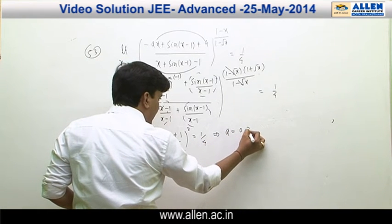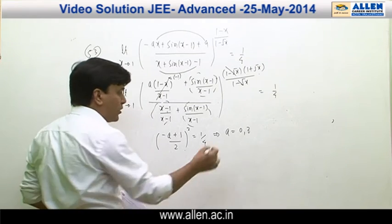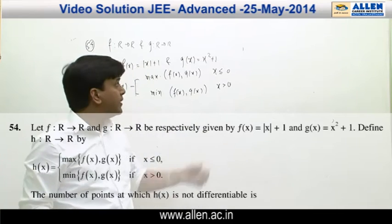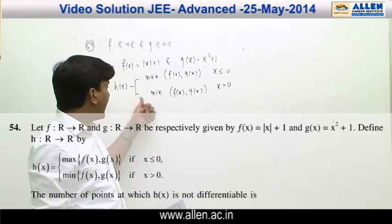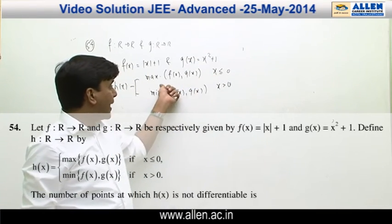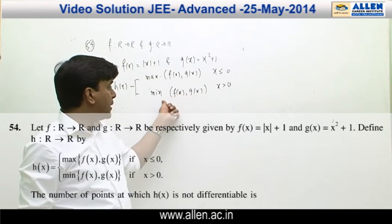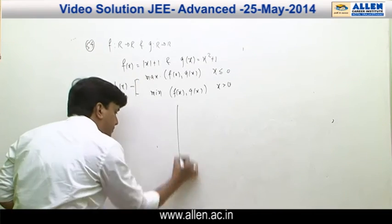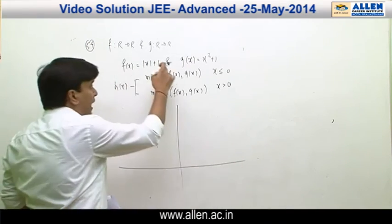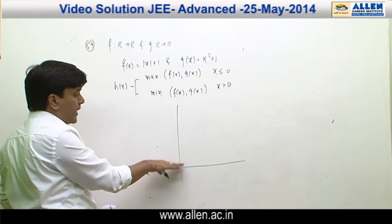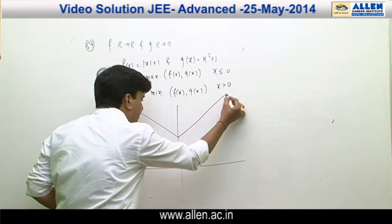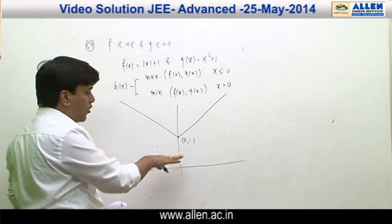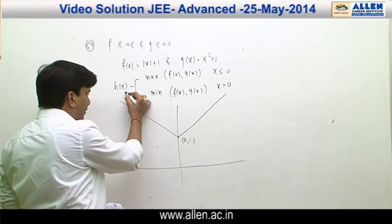In question number 54, f(x) = |x + 1|, g(x) = x² + 1, and h(x) is defined as the maximum of f(x) and g(x) for x ≤ 0, and the minimum of f(x) and g(x) for x > 0. Sketching f(x) and g(x) on the same axes: |x+1| is 1 unit above the x-axis as a V-shape, and x²+1 is also 1 unit above the x-axis as a parabola.